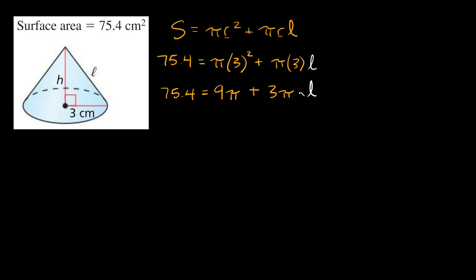We're solving for l, so we want to isolate it. First, subtract 9π from both sides — the 9π terms cancel on the right — and on the left, 75.4 minus 9π equals approximately 47.1. So we're left with 47.1 equals 3πl.